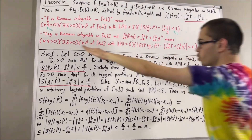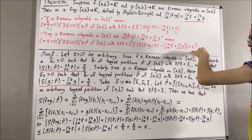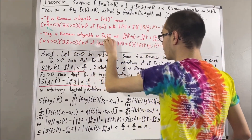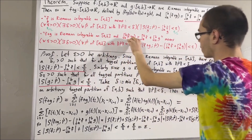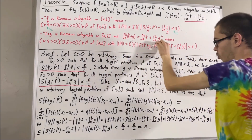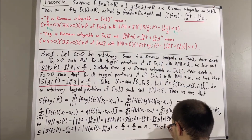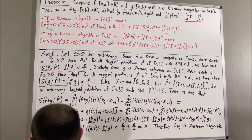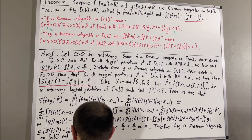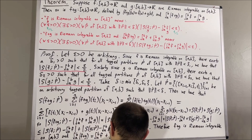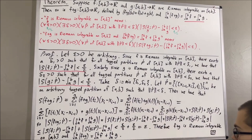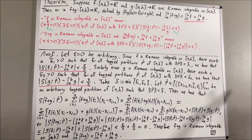This shows the required inequality holds, proving that f + g is Riemann integrable on [a, b] and that the value of its integral equals the integral of f plus the integral of g. This completes the proof.